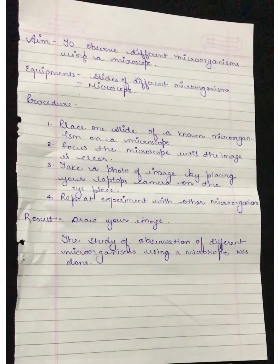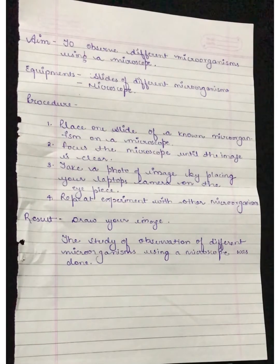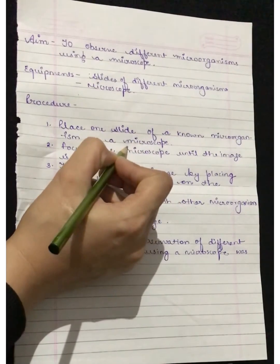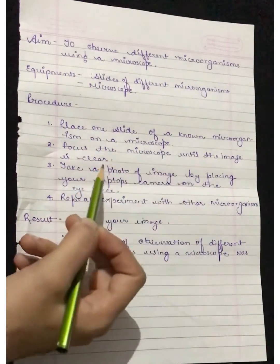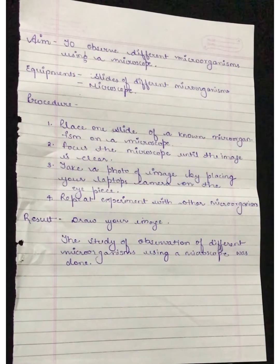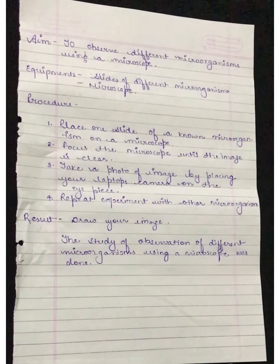This will be our next practical. The procedure is to place one slide of a known microorganism on a microscope. First of all, we will place the microscope, then we will focus it until the image is clear. We will be taking the photo of the image by placing our laptop camera on the eyepiece. Then we will be repeating the experiment with other microorganisms, following the same procedure.